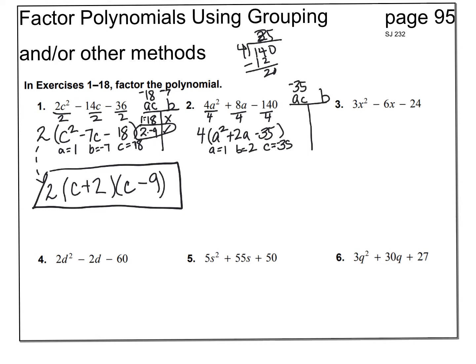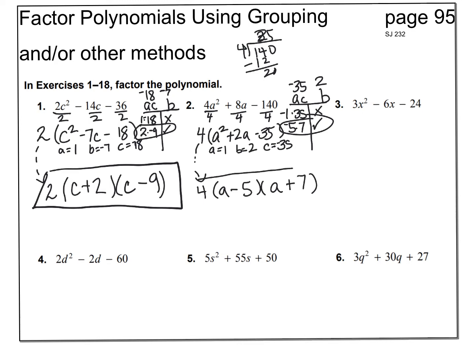Factors of negative 35 that give a sum of 2 — one positive, one negative, positive sum, so the smaller number will be negative. 2, 3, 4 will not go into 35. 5 will, 7 times. Negative 5 plus 7 is 2, so I found my factors. Bring down the greatest common factor, put 2 empty binomials, use the middle variable a, then minus 5 and plus 7. That's the answer to number 2.